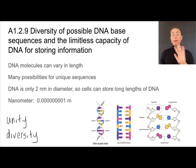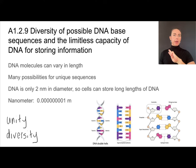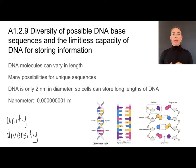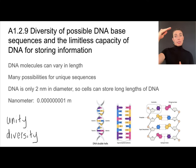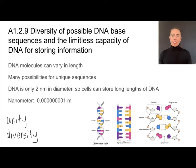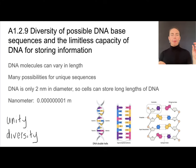In theme A — unity and diversity — the unity is that all living organisms use DNA, sharing the same A's, T's, G's, and C's and the rules of complementary base pairing. Diversity arises because DNA molecules can vary in length, and there is an almost infinite number of possible base sequences. A sequence reading A, T, T, G, C is very different from A, T, A, G, C, C — those different patterns produce different genetic traits.